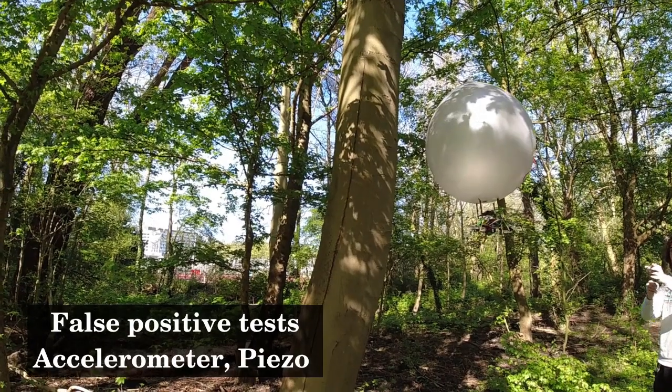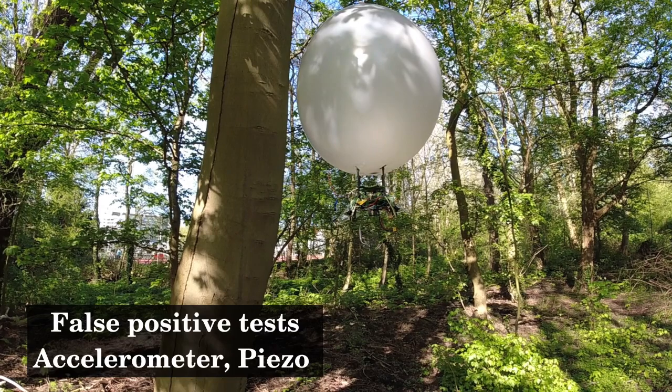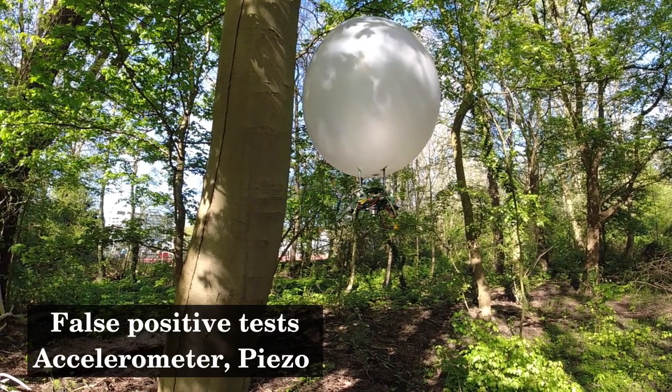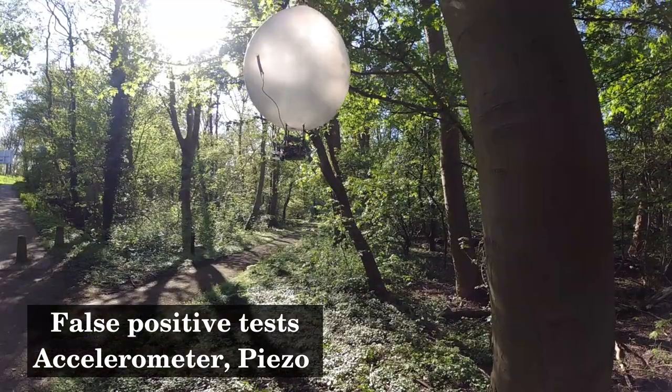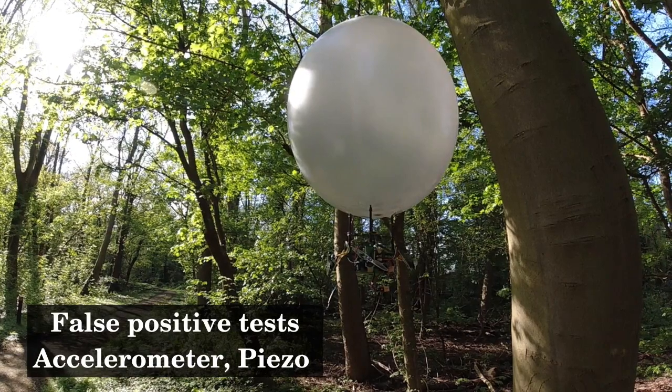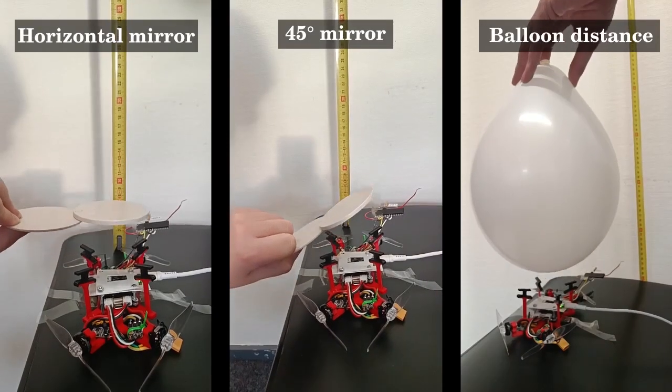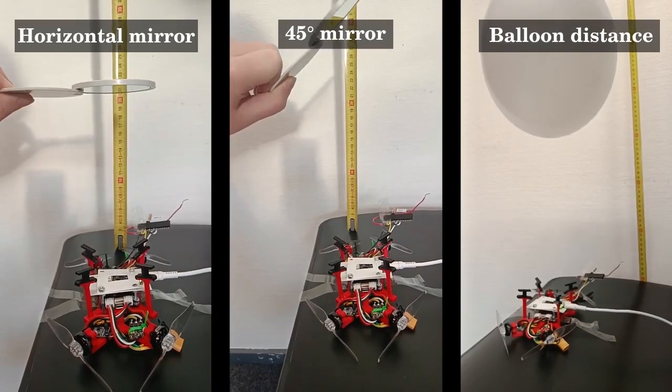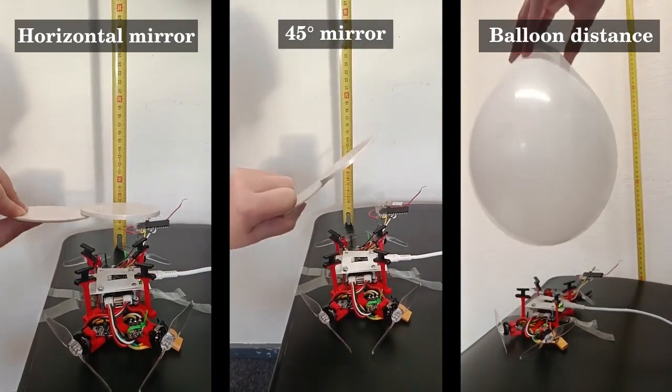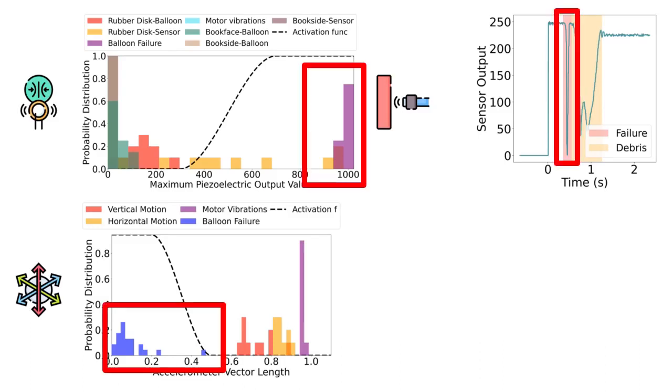We evaluated different scenarios like collision with trees, branches, and other small objects which the blimp might encounter outdoors. These could potentially be registered as false positives by the accelerometer or piezo when detecting balloon failure. Different false positives were also evaluated for the proximity sensor, which uses infrared light for balloon detection. These included mirrors, balloon material, and balloon distance.